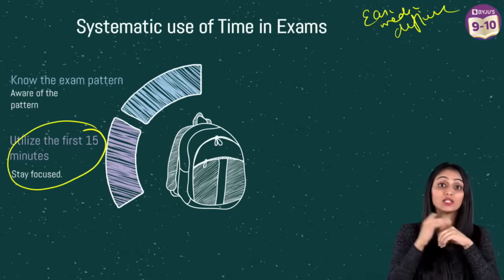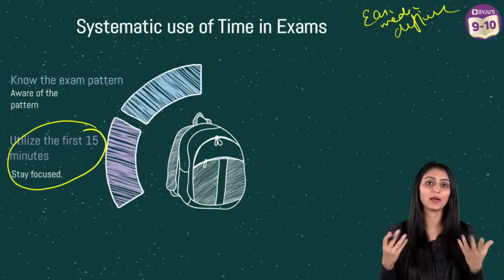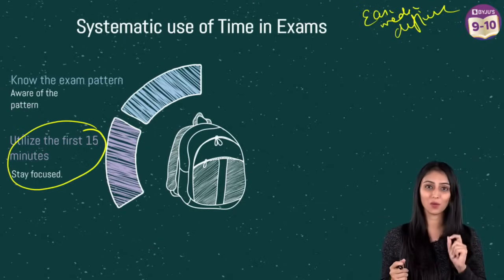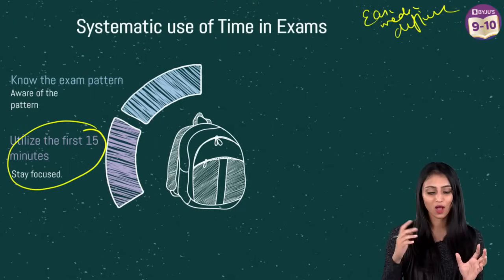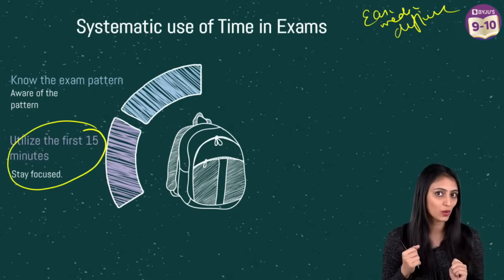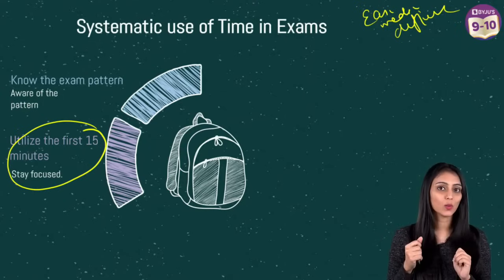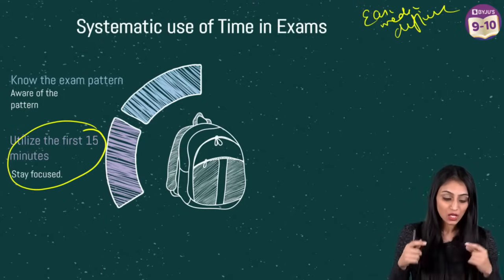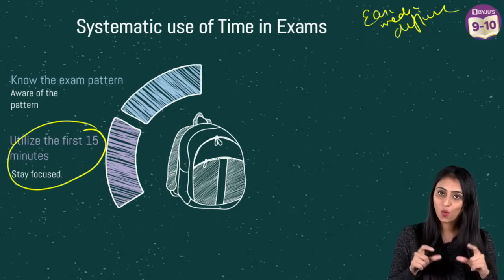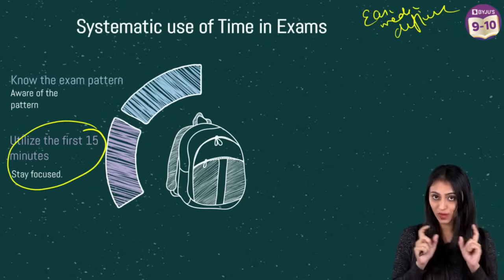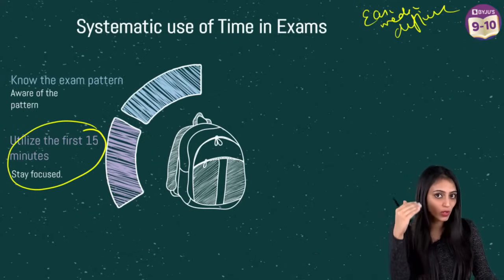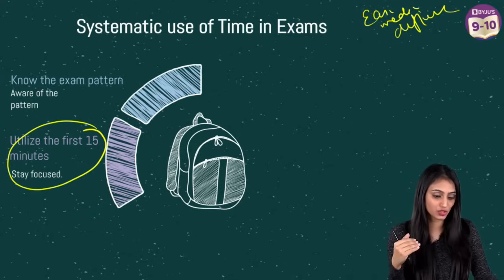That way you know how much time you can spend on the tougher questions. There might be some questions which you feel you don't know, or you're not sure which concept to use. So you can plan a strategy for how you're going to attempt the paper. These 15 minutes will give you an overall idea of the question paper and you can prepare a rough plan in your mind for how to attempt the questions.